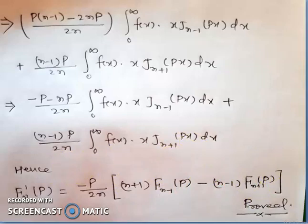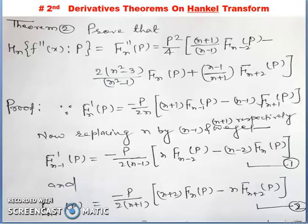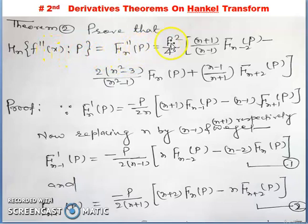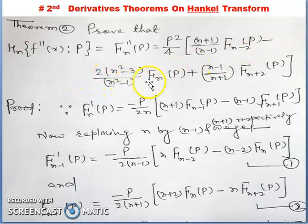Now the second derivatives of the Hankel transform. This is the second theorem: the Hankel transform of f''(x), Hn[f''(x); p] = fn''(p) = p²/4 * [(n+1)/(n-1)*f_{n-2}(p) - 2*(n²-3)/(n²-1)*fn(p) + (n-1)/(n+1)*f_{n+2}(p)].